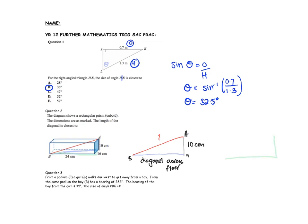I'm going to use the triangle on the ground. There's the blue line — B and A — and across the floor I can see 24 centimeters and this little bit along here is 16. So I'm using that right angle triangle on the floor. It's a right angle triangle so I'll use Pythagoras: x squared equals 24 squared plus 16 squared.